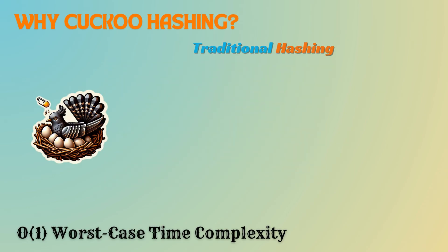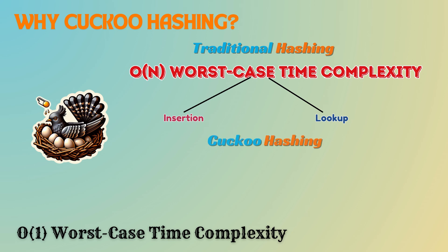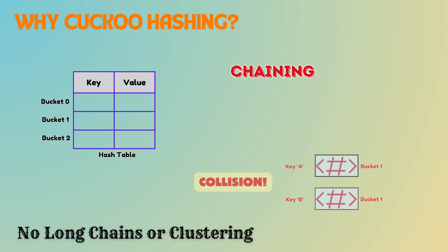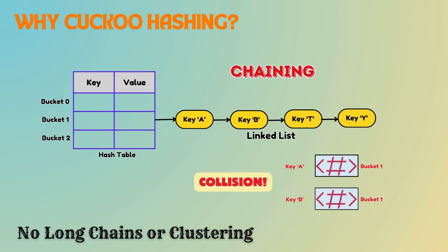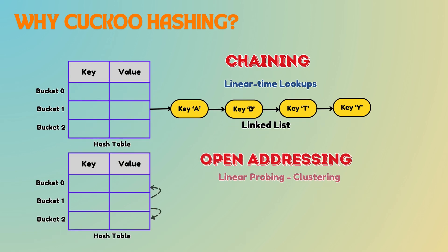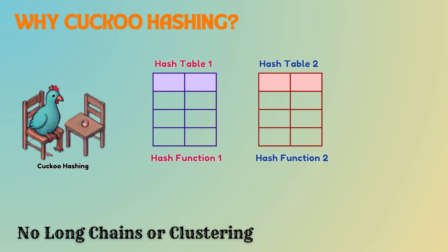In contrast to traditional hashing methods like chaining or open addressing, cuckoo hashing has distinct advantages. Unlike traditional hashing where worst-case time complexity for lookups and insertions can degrade to O(n), cuckoo hashing guarantees O(1) worst-case time for both operations. With chaining, collisions can result in long chains requiring linear time lookups; in open addressing, clustering can cause contiguous blocks of occupied slots to degrade performance. Cuckoo hashing avoids these pitfalls by ensuring every key has a constant number of candidate positions.